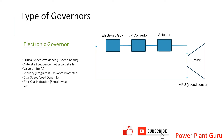Now coming to the electronic or I2P type of governors. Speed measurement in new turbines is done using a toothed wheel mounted on the steam turbine shaft. There are cuts or teeth on that shaft, and a probe positioned nearby looks at this as the shaft rotates.